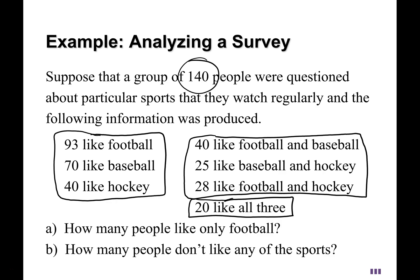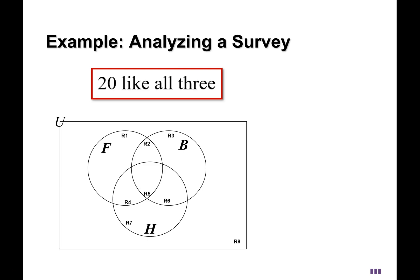First up, let's start with the last piece of information, the fact that 20 like all three. So we have a Venn diagram with three circles drawn in this manner, where each one is labeled with a letter that represents the category. And I like to put in these regions. I put an R in front of the numbers so that we don't get mixed up with the numbers that are going to go inside of these regions. And so which region corresponds to being inside of all three at the same time? The answer is that it's going to be region 5.